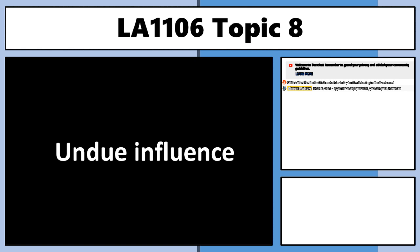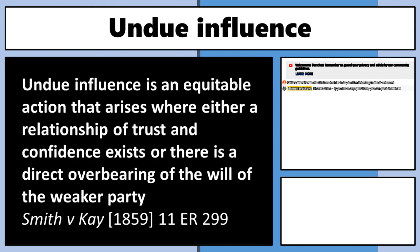Some academic commentators say that undue influence is kind of equity's version of duress. I don't appreciate this framing — it's a vitiating factor where somebody's will is overborne, but not through overt threats. Sometimes they can be very subtle, but they're not threats to the person, economic interest, or goods. They might be threatening to break up someone's marriage.